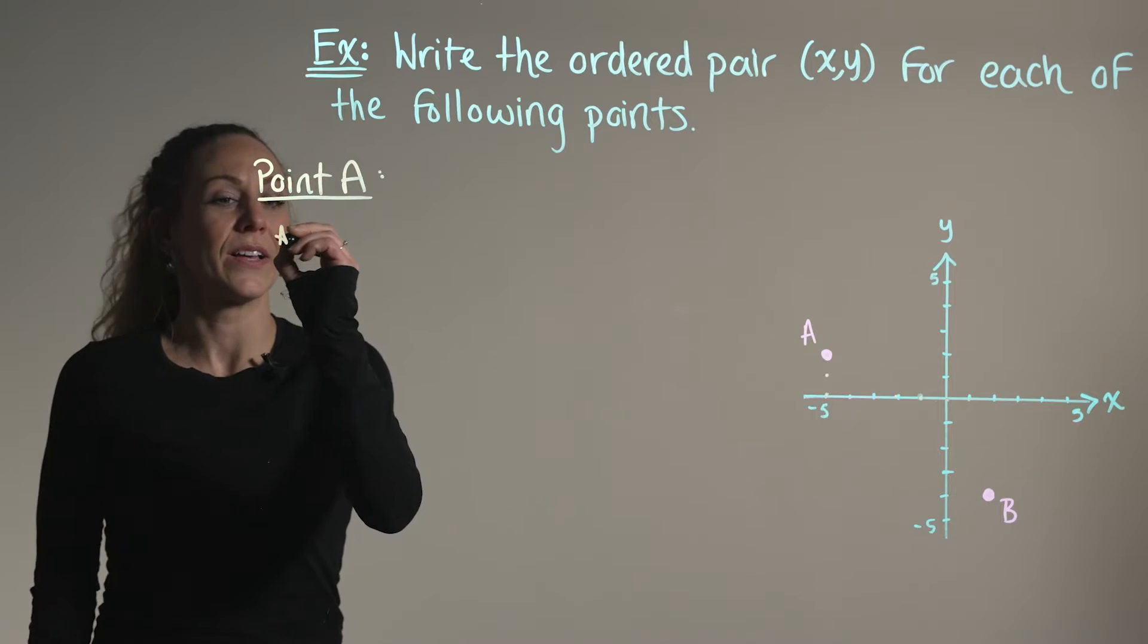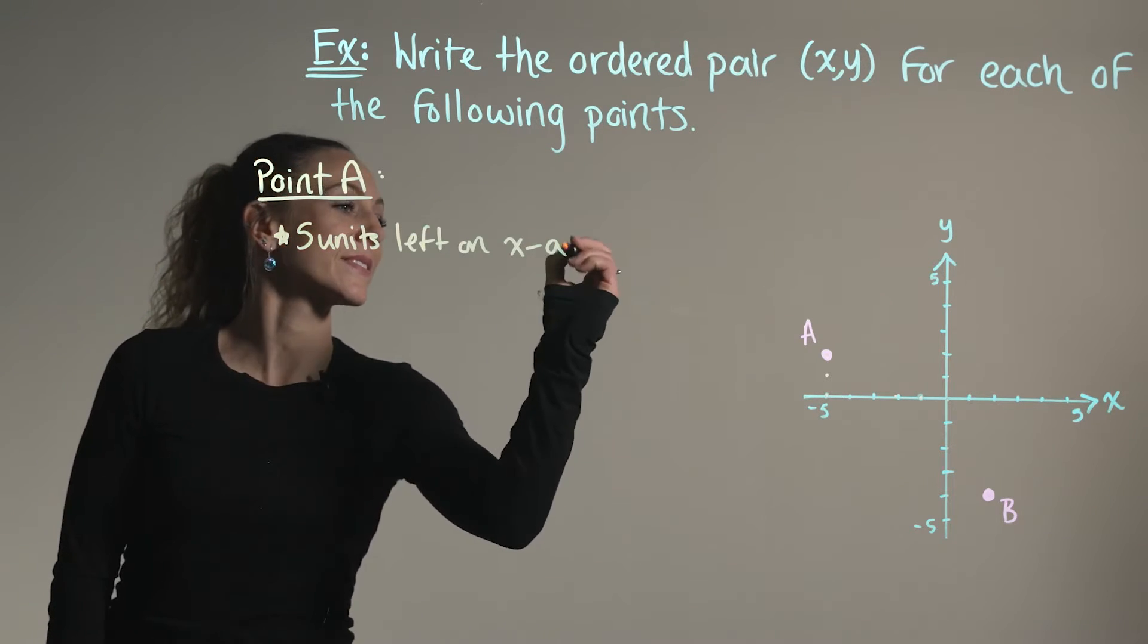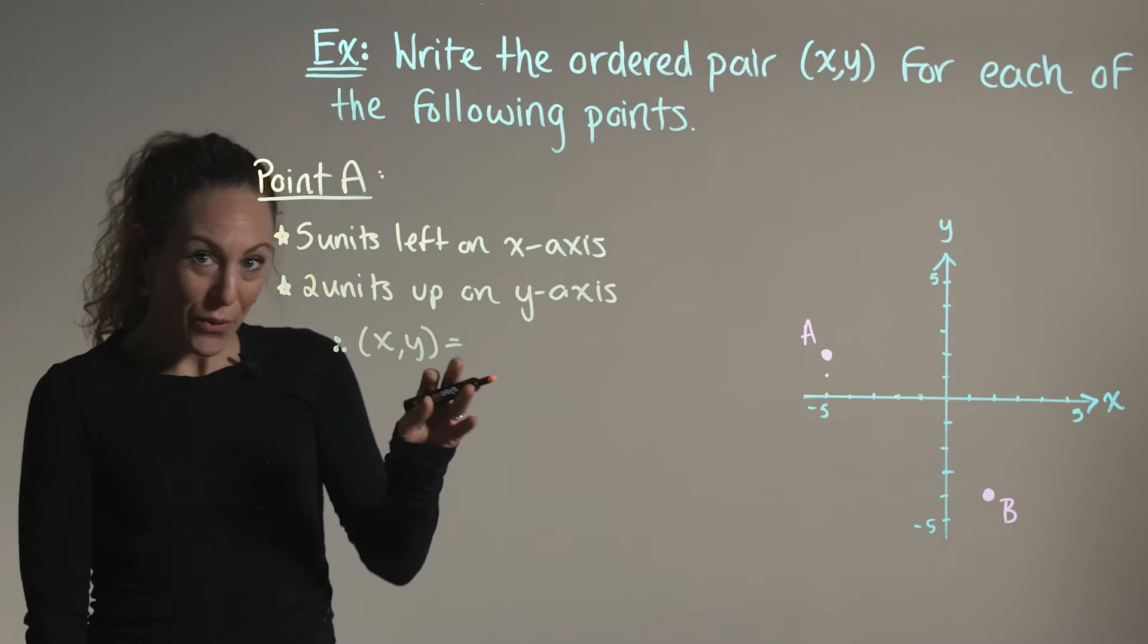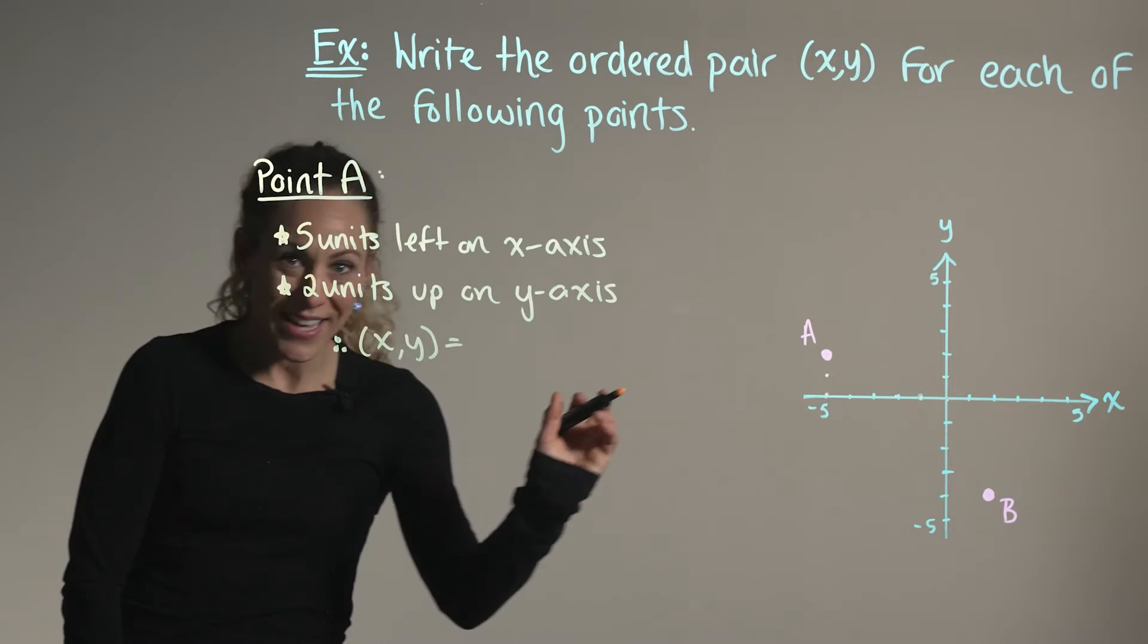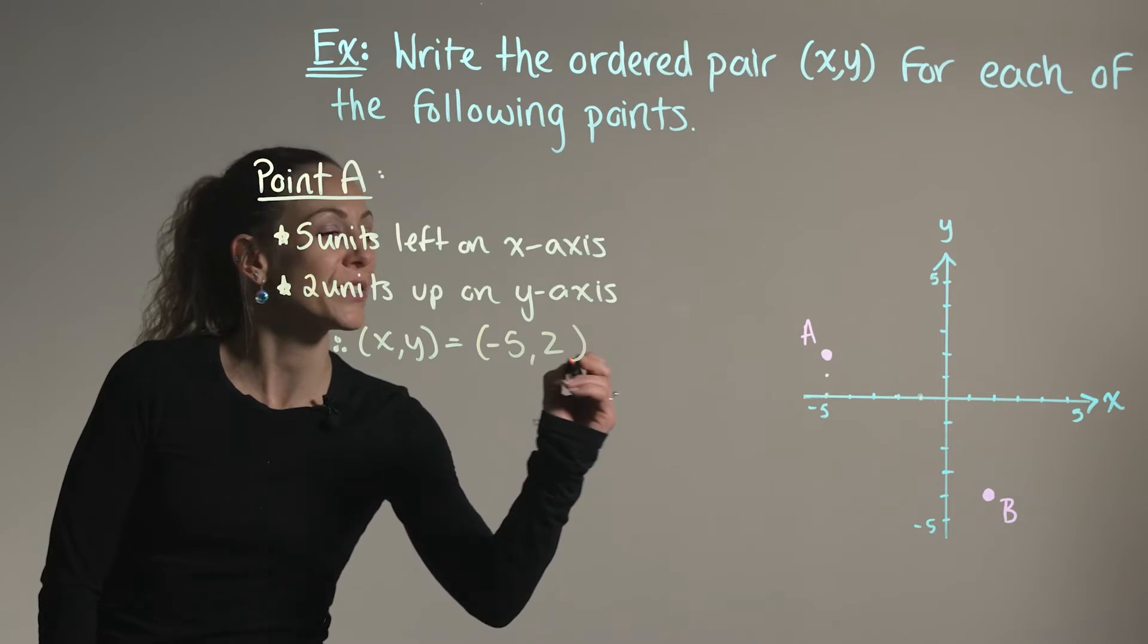So we've moved five units left on the x-axis and we've moved two units up on the y. So the ordered pair for point A is represented by (-5, 2).